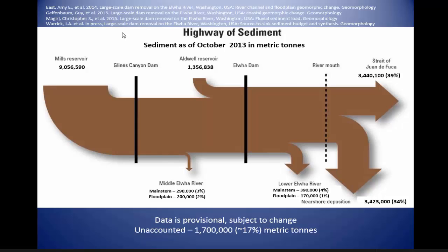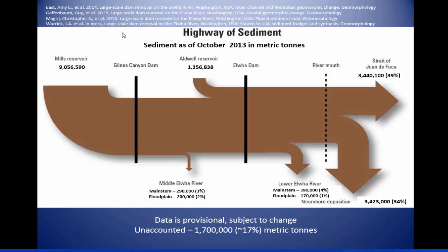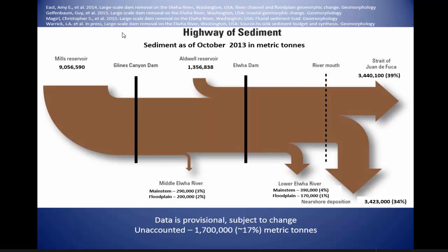Looking at the whole picture as a budget, the majority of sediment that has been released has made it out to the Strait of Juan de Fuca — it's only about 20 kilometers from the upper dam to the river mouth. About 10% of it roughly stayed in the river, with the rest essentially going out the river mouth: some staying and developing that delta, and some becoming part of the longshore drift and moving away.